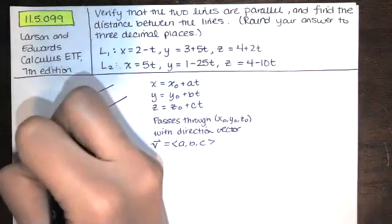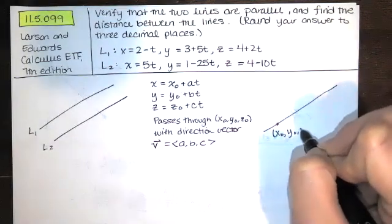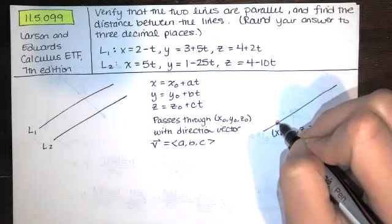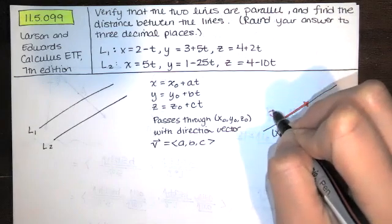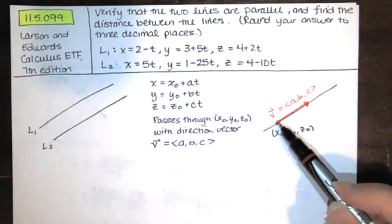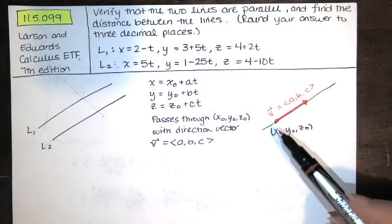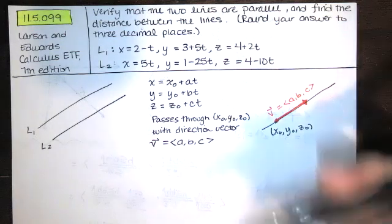In general, (x₀, y₀, z₀) is just a point on the line, and the direction vector v has components a, b, and c. As t takes on positive values, we go in the same direction as the direction vector; as t takes on negative values, we trace out the other half of the line.